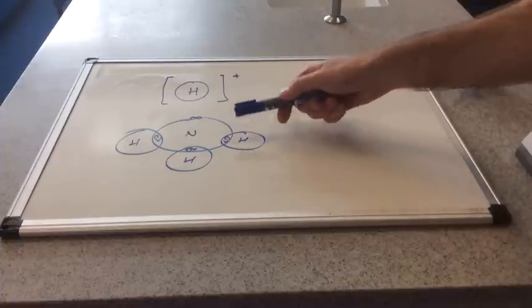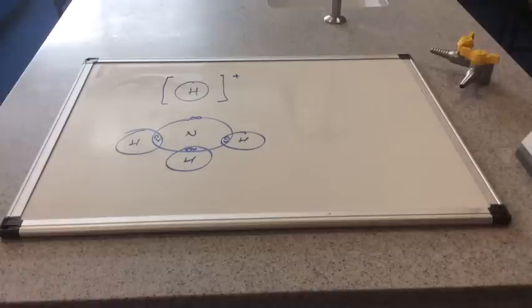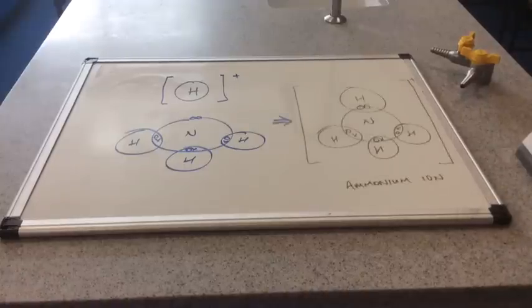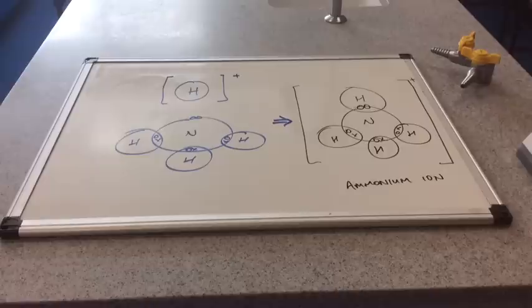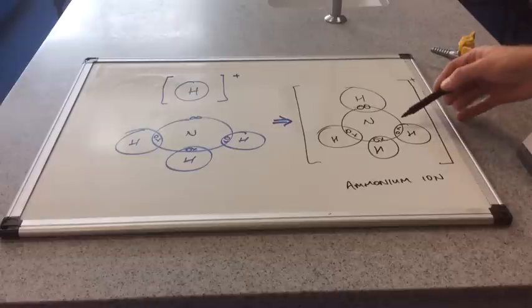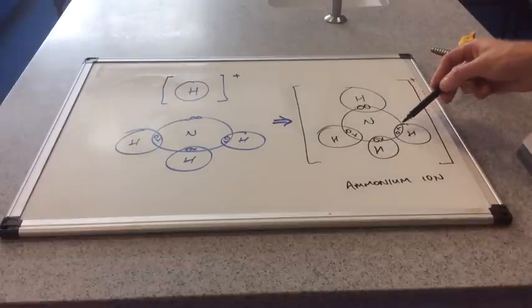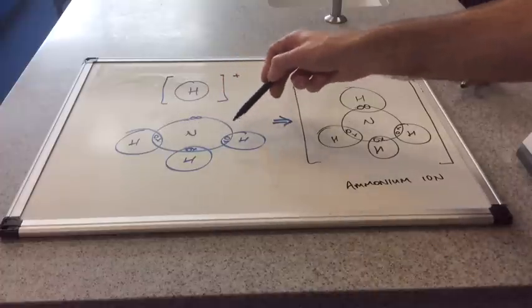How could these two particles form some kind of covalent bond? On the right there I've drawn up the dot and cross diagram for the ammonium ion, and you can see those three original covalent bonds in this blue ammonia molecule here.